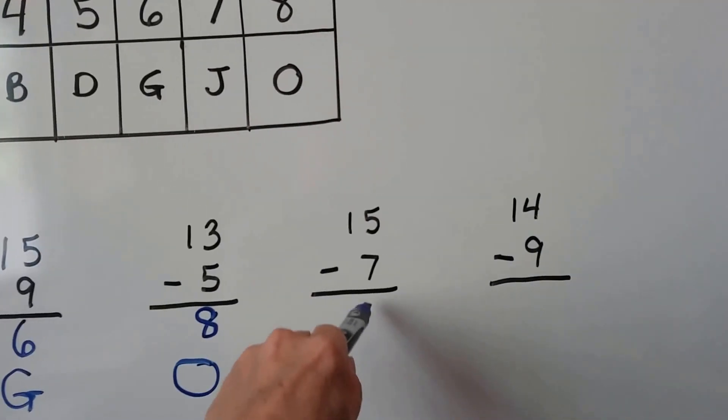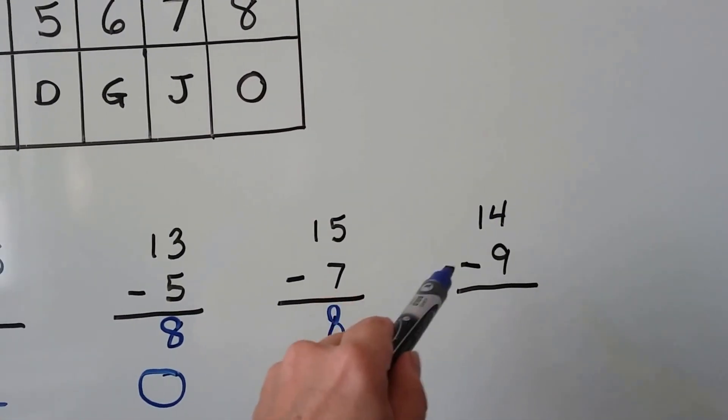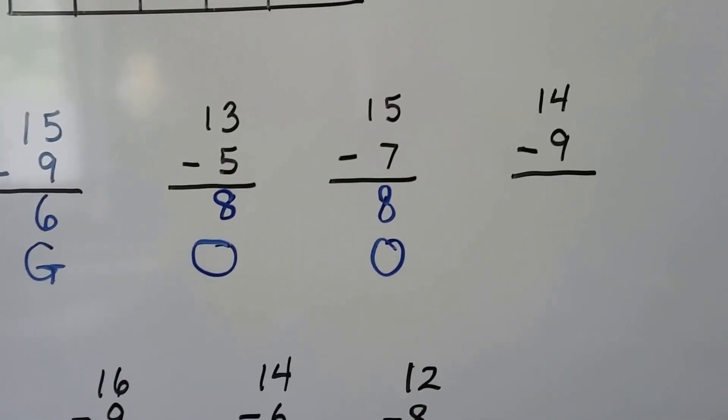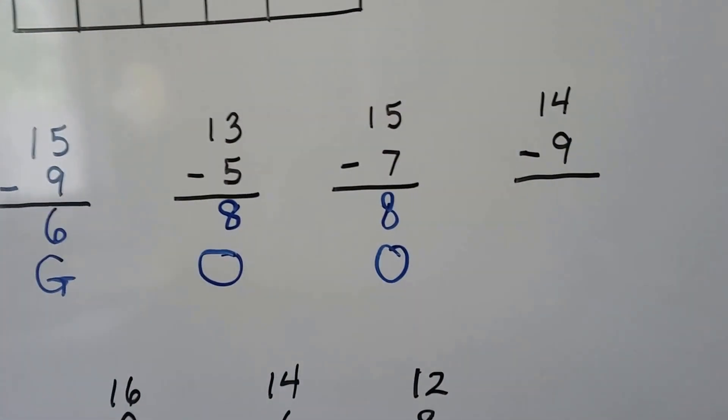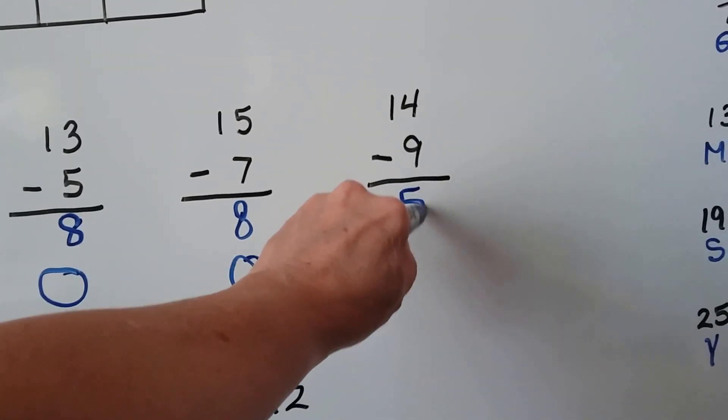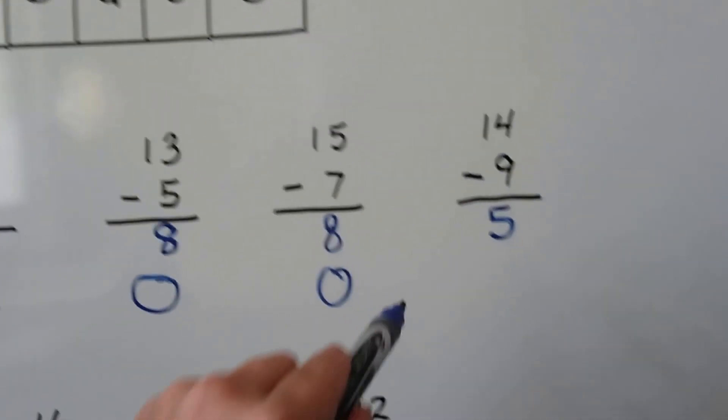Now we have 14 minus 9. We count back. 14, 13, 12, 11, 10, 9. That's 5. 14 minus 9 is 5. We look on our code chart, and 5 is a D. So it says good.